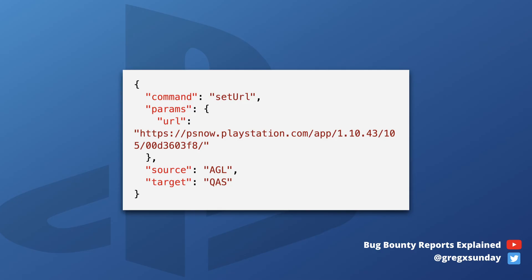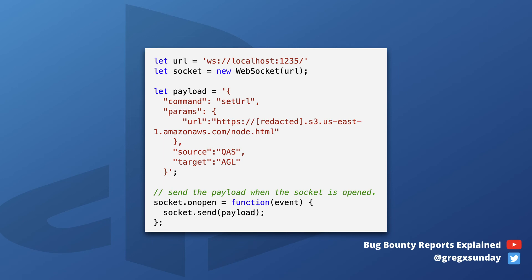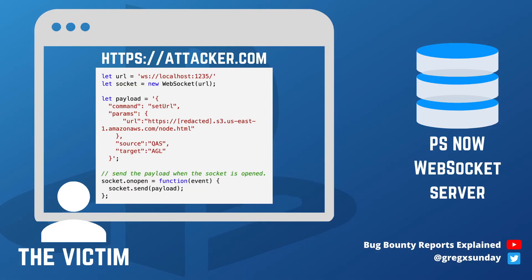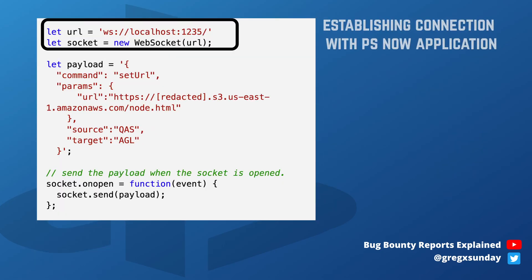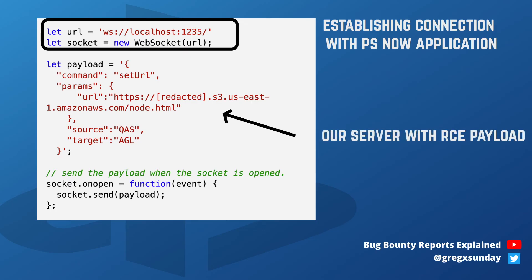So the full exploit looks like this: the victim opens a malicious website while PSNow is running in the background. The first two lines establish a connection with the local WebSocket server. Then a WebSocket message is sent with the setURL command, and the parameter is a URL that points to the RCE exploit. As the target application we choose AGL, because this is the one that runs with Electron. When that website is opened, the RCE gets triggered and the attack is successful.